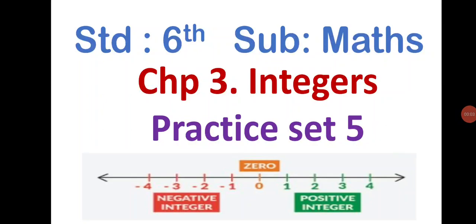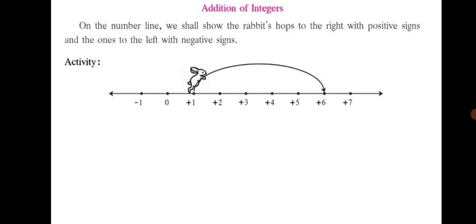Standard sixth subject maths, chapter 3 integers, practice set number 5. Dear students, you have learned what integers are: negative numbers, zero and positive numbers together form a set of integers. Today we are going to learn addition of integers on the number line. We shall show the rabbit's hops to the right with positive signs and the ones to the left with negative signs.